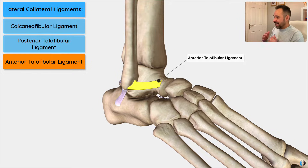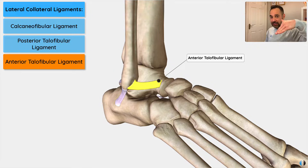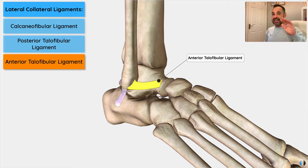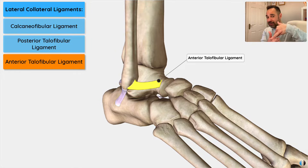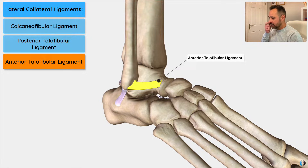The ATFL — the anterior talofibular ligament — is by far the most commonly injured of the three ligaments. This most commonly happens when an individual has an inversion or inward sprain of their ankle combined with plantar flexion. The most common scenario is when someone jumps and lands in that inverted plantar flexed position, stretching the anterolateral side of the ankle. We see this in netball players, basketball players, even soccer players, when they jump and land in that plantar flexed inverted position.